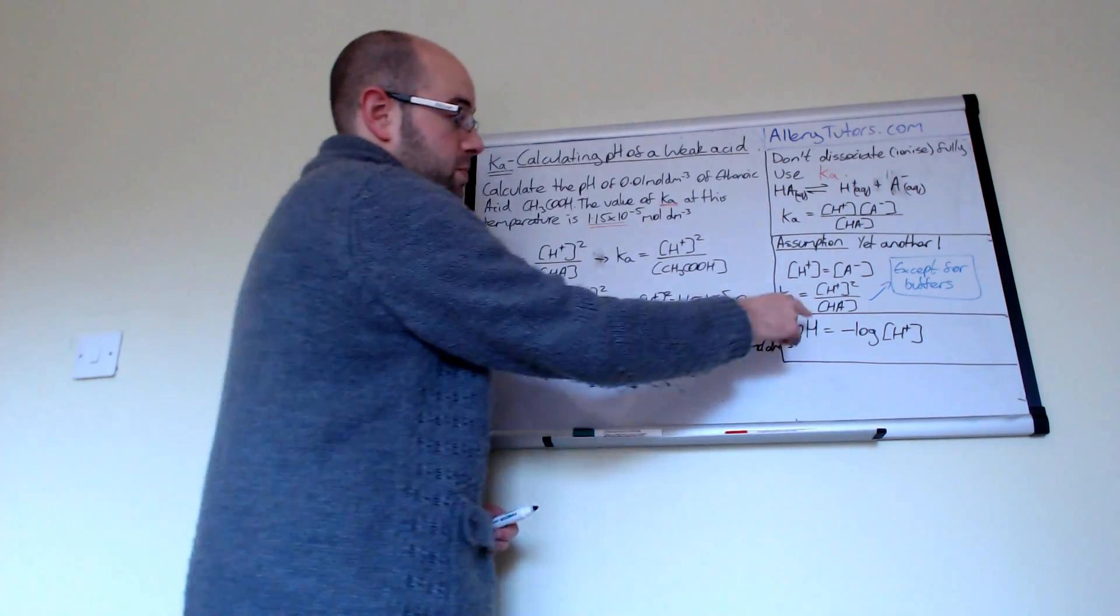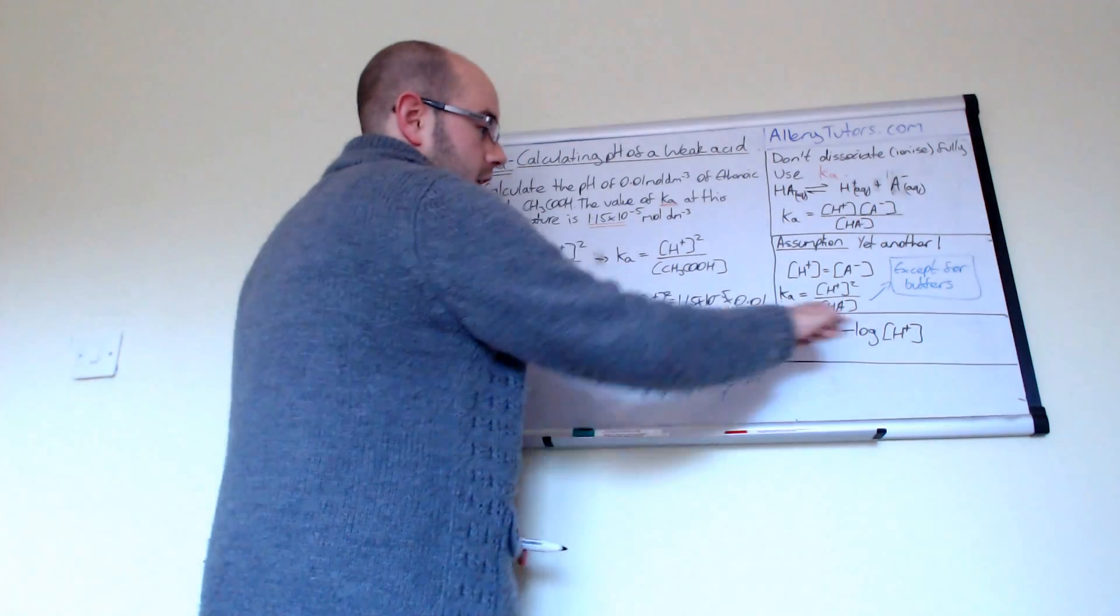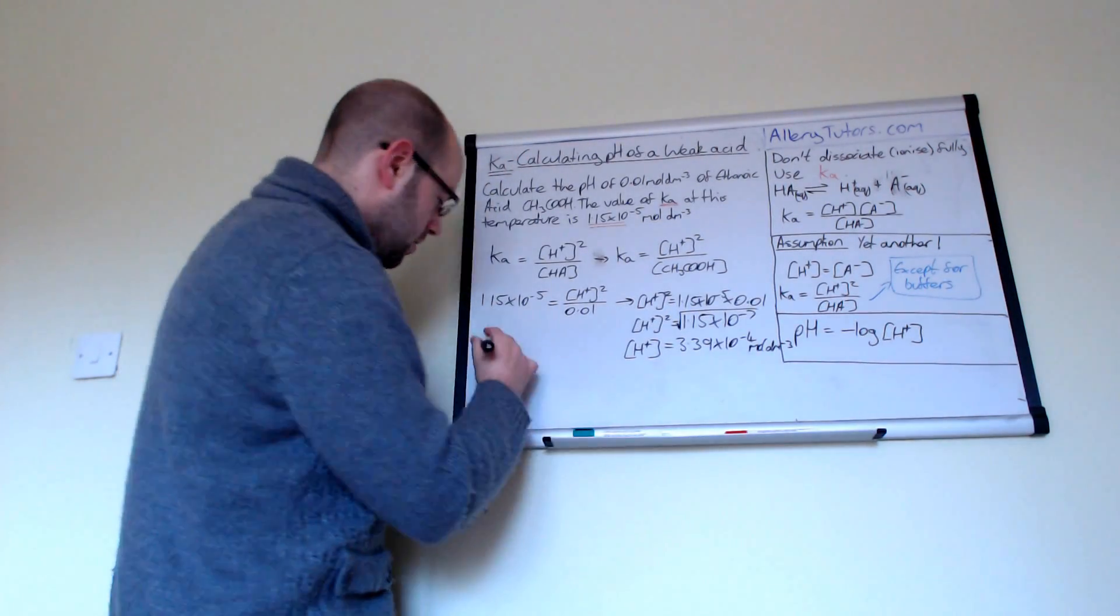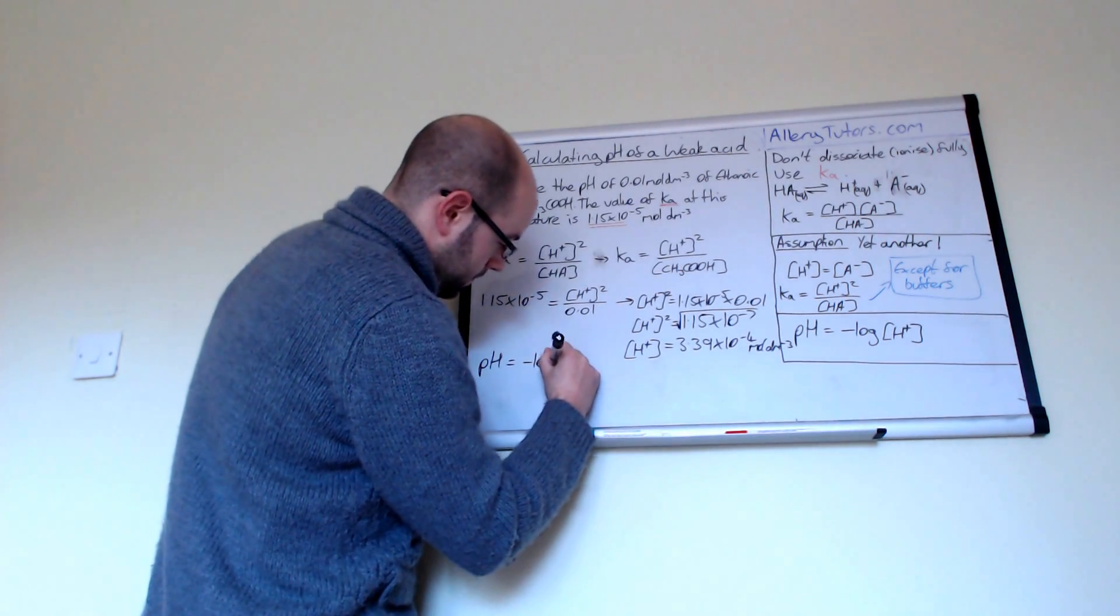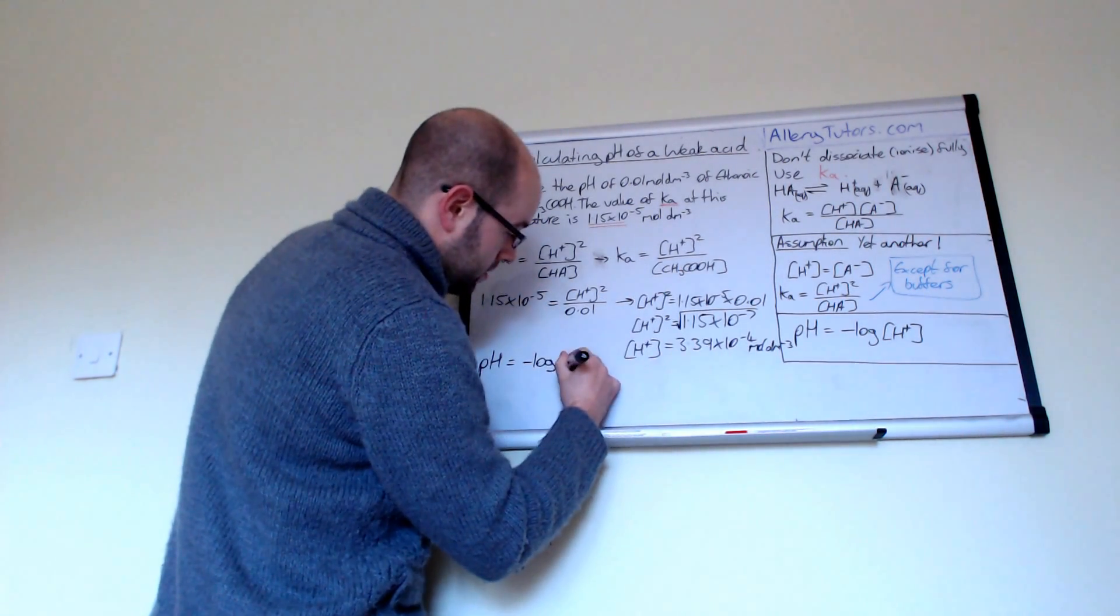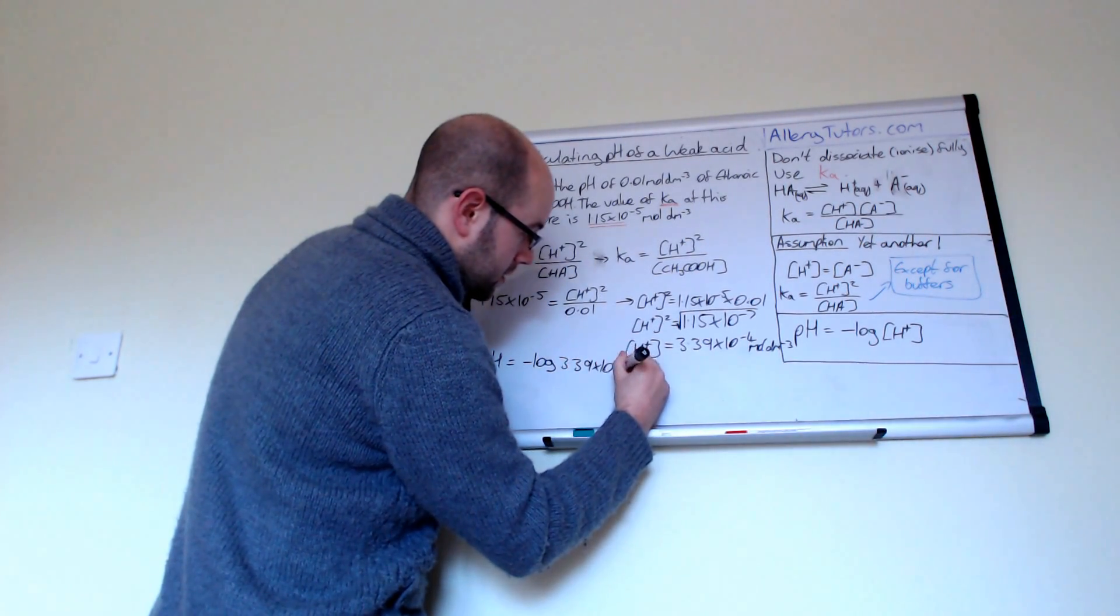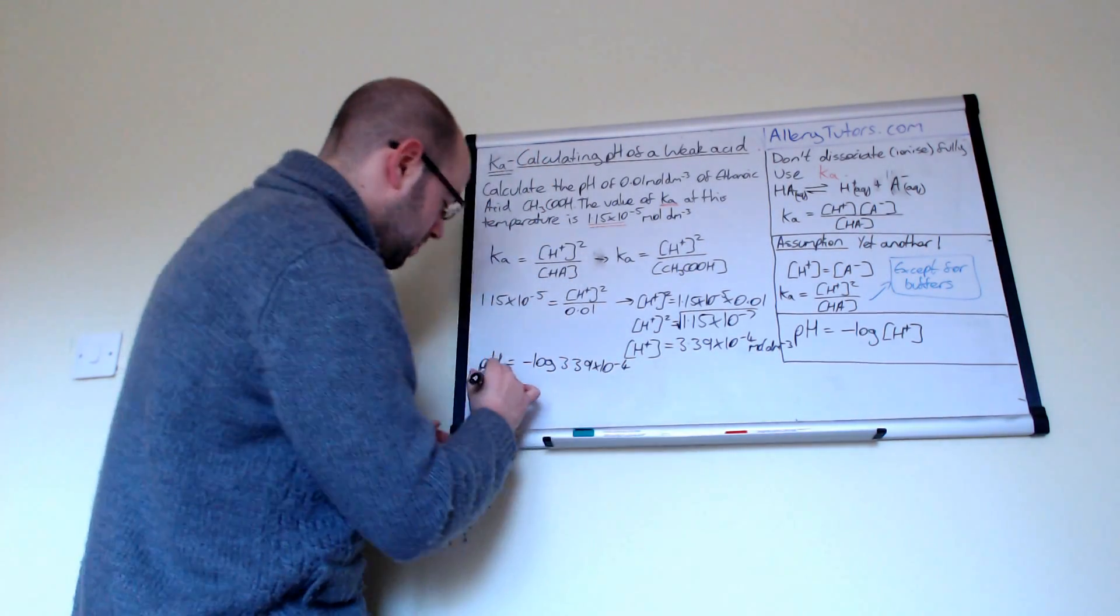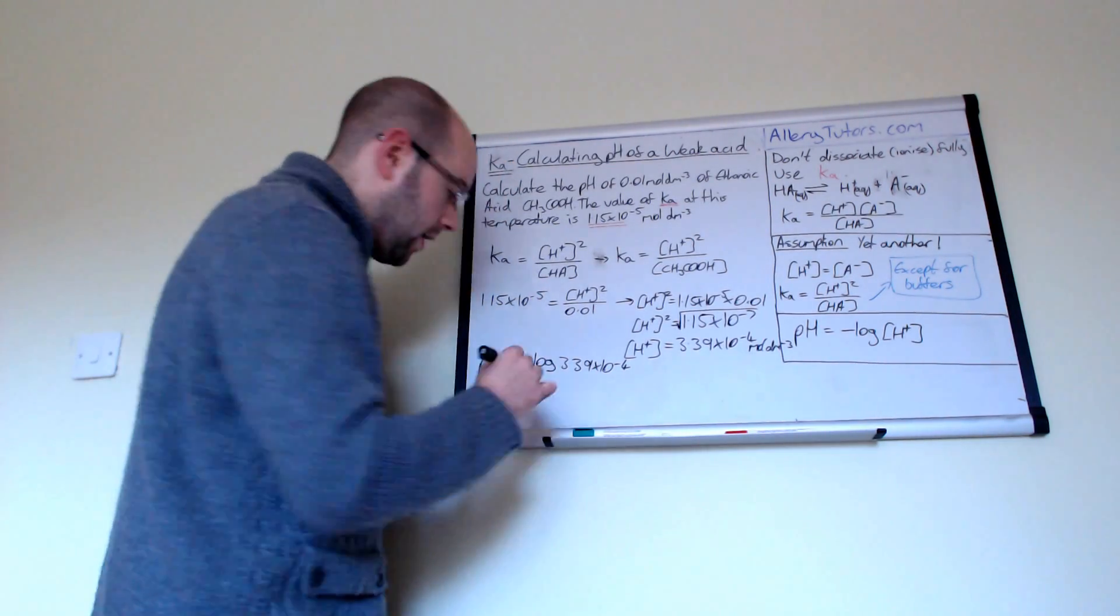Now, because we've got this, we can actually use this to work out our pH by just substituting it into our equation over here. So our pH would equal the minus log of 3.39 times 10 to the minus 4. And if we put that in, we should get a pH value of 3.48.